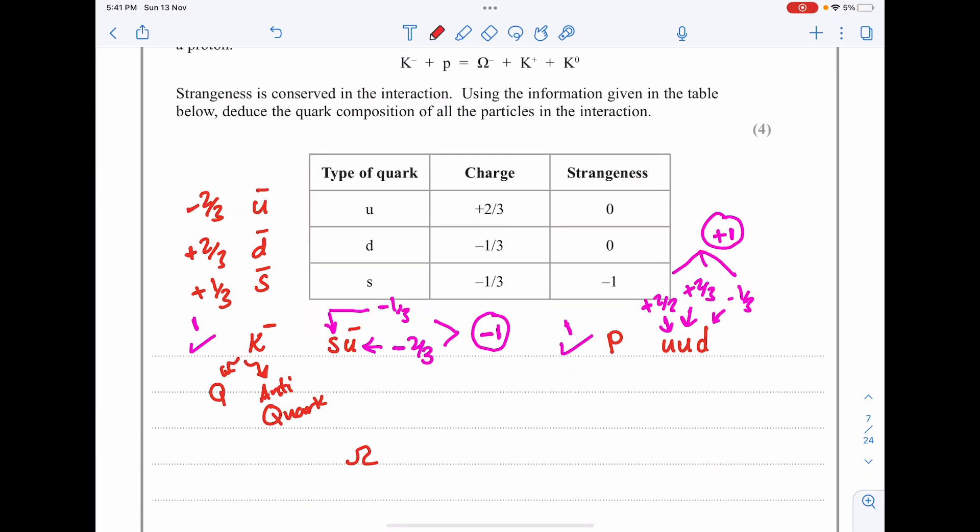Omega is negatively charged. It should be a baryon because if you look at the left side we have one meson and one baryon as a proton, and at the right side we have two mesons, the positive K⁺ and the neutral K⁰. So the omega should be a baryon and consists of three quarks.